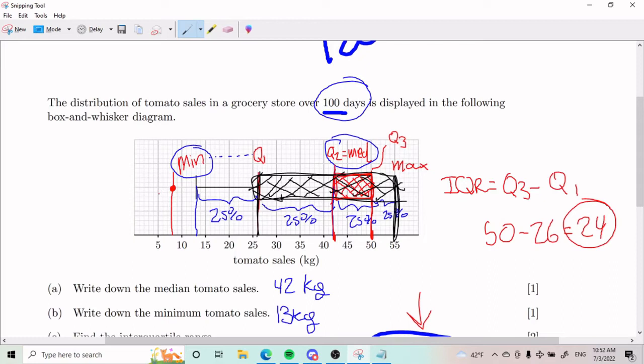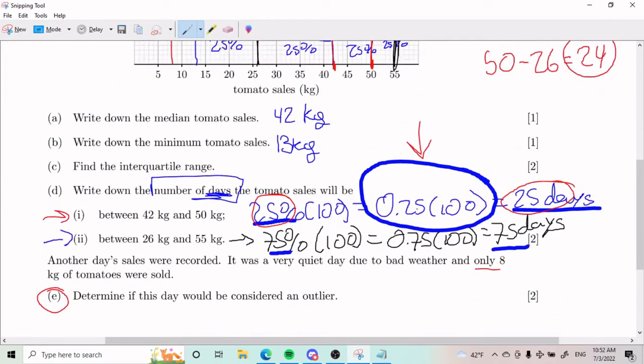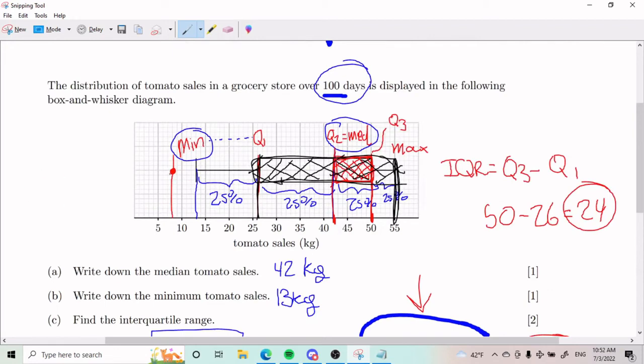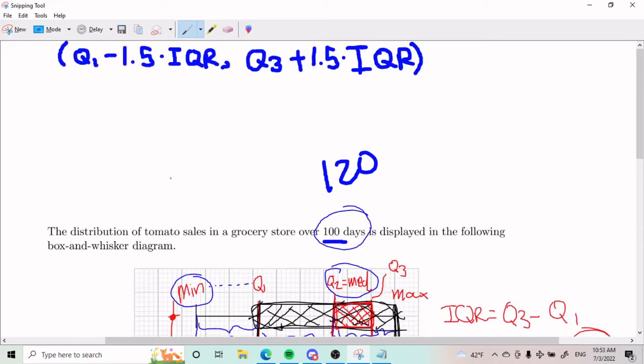As convincing as that sounds, there's actually a formula for outliers that we have to use, or else we don't get all the marks. You might get one point for saying it's below the minimum, but the right way to approach it is using a formula. It's actually up here. Anything that is not within this interval that we're about to define is simply an outlier.